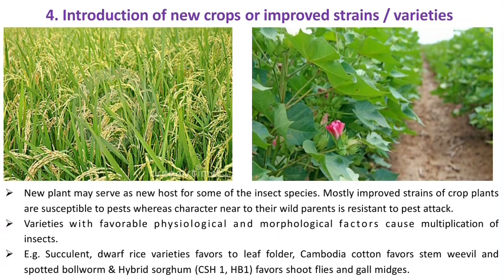The fourth cause is the introduction of new crops, improved strains and varieties. The new plant may serve as a new host for some insect species. Improved strains of crop plants are often susceptible to pests, whereas their wild parents are resistant to pest attack. Varieties with favorable physiological and morphological factors favor insect multiplication — for example, succulent dwarf rice varieties favor leaf folders in rice, Cambodiac cotton favors American bollworm, hybrid sorghum favors shoot flies and gall midges.